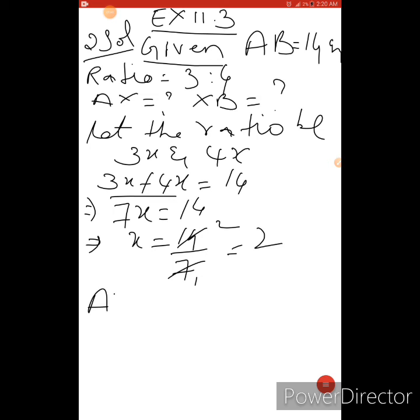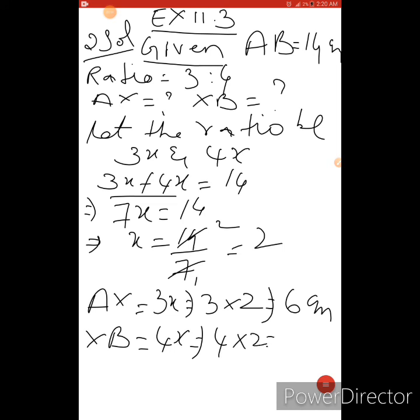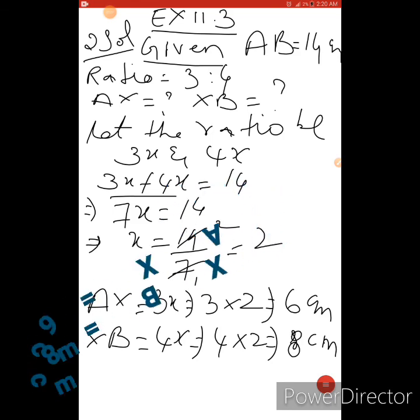Now length of AX, this is equals to 3X. 3 into, in place of X I am writing 2. So how much? 6 centimeters. Next we have to find out XB. XB is how much? 4X. 4 into 2, that is 8 centimeter. This is 8 centimeter. Clear? Thank you.